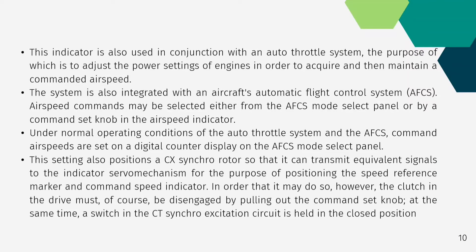Under normal operating conditions of the auto throttle system and the AFCS, command airspeeds are set on the digital counter display on the AFCS mode select panel. This setting also positions the CX synchro rotor so that it can transmit equivalent signals to the indicator servo mechanism for positioning the speed reference marker and the command speed indicator. However, the clutch in the drive must be disengaged by pulling out the command set knob, at the same time a switch in the CT synchro excitation circuit is held in the closed position.